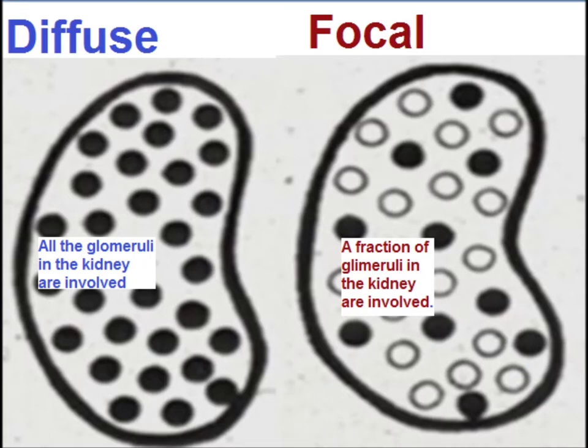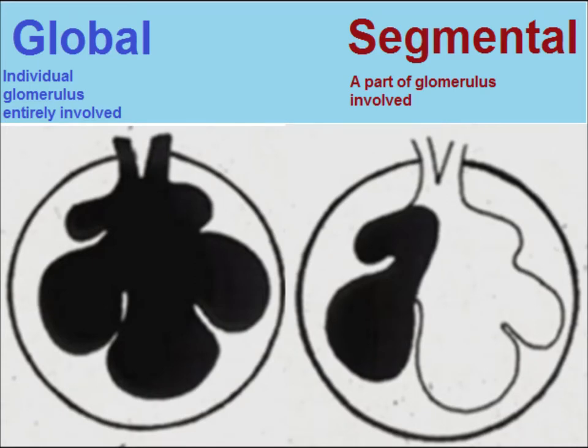Diffuse means all the glomeruli in the kidney are involved, and focal means a fraction of glomeruli in the kidneys are involved. So if all glomeruli are involved, the term is diffuse, and if only some, then focal.